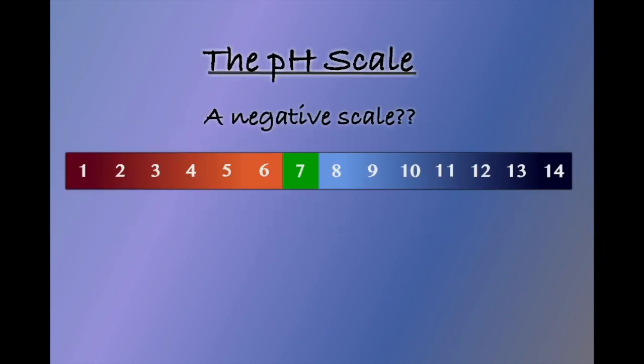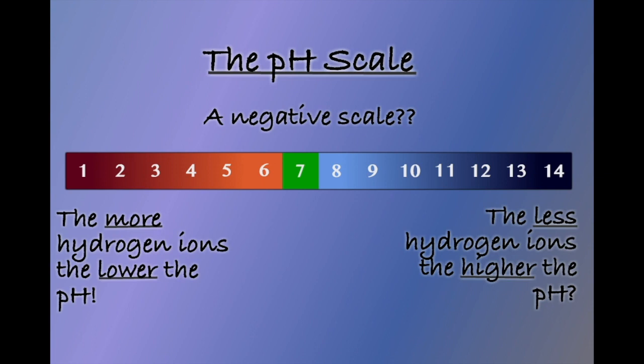pH runs from 1 to 14 and is, a little confusingly, a negative scale. By this we mean that the higher the concentration of hydrogen ions, the lower down on the scale we will go. A pH of 7 is considered neutral.